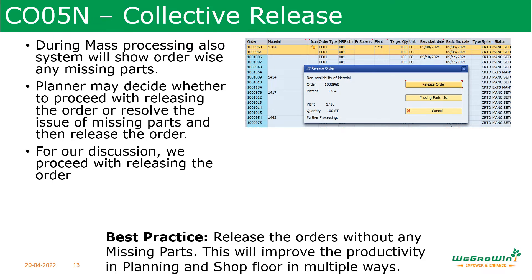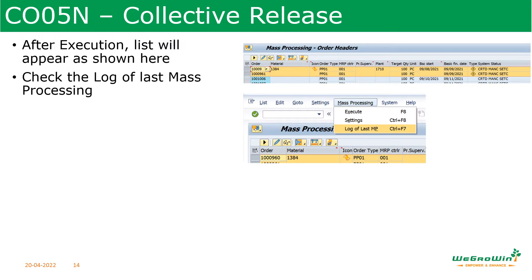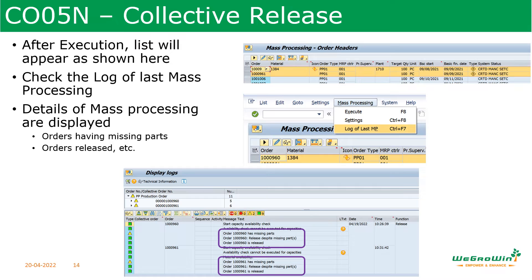We are continuing to release the order. After executing, we see the list is updated. The status still shows CRTD because the page is not refreshed yet. To see the log, go to mass processing and select 'Log for last mass processing.' Now we see the two selected orders — 960 and 961. It is showing that the orders have missing parts but are released. All statuses are shown. This is how we release orders collectively.